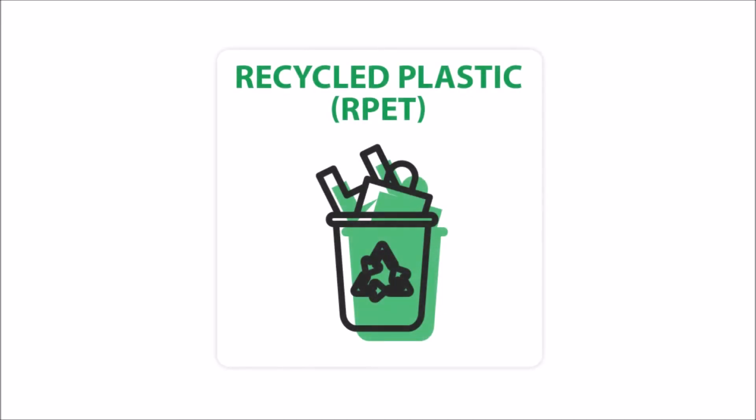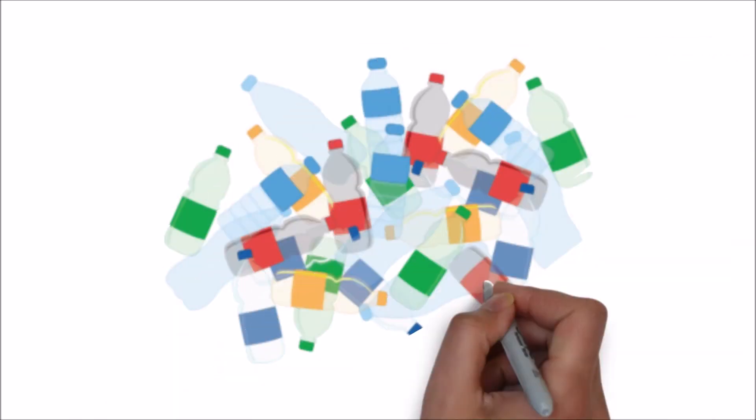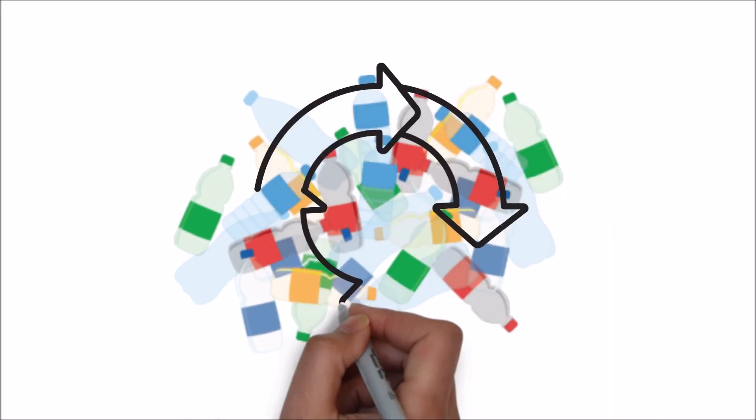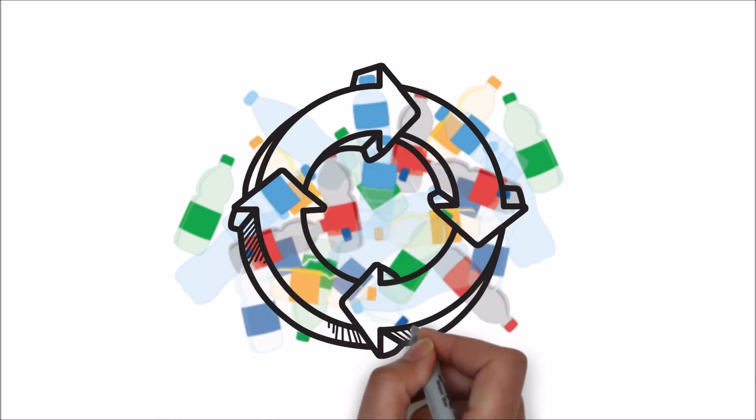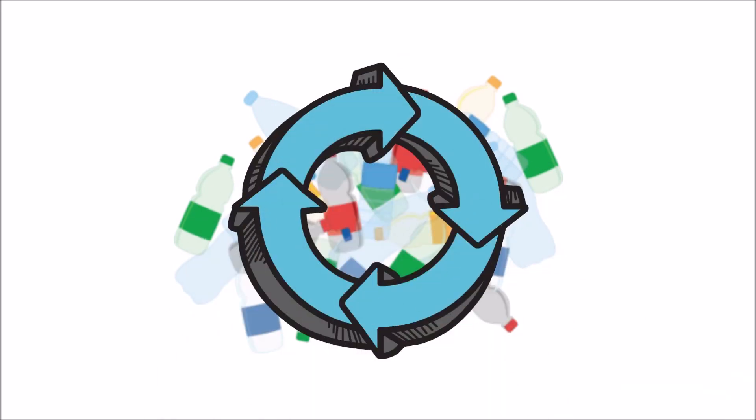So for there to be enough recycled plastic for the soft drink industry to use in new bottles, a new system is needed. For instance, one such new system is a circular economy. This means that industries would improve the way they make bottles. Above all, they would focus on using more recycled bottles in each new bottle created.